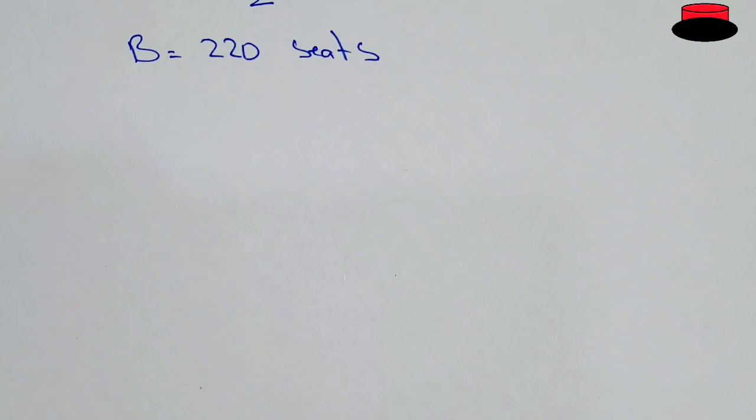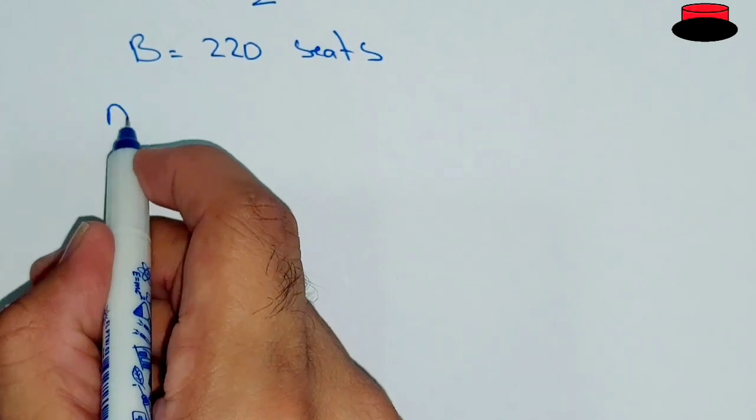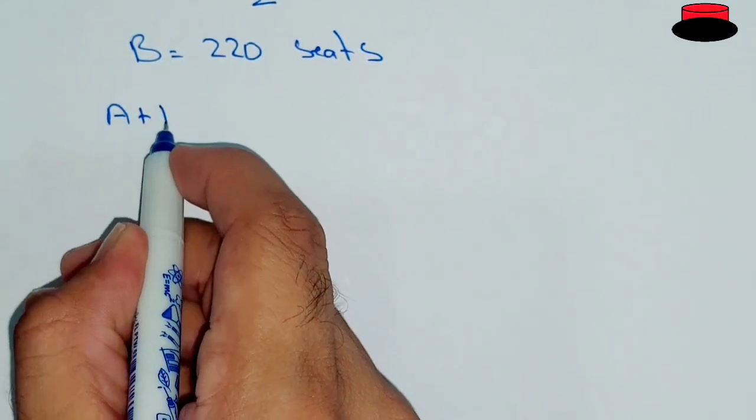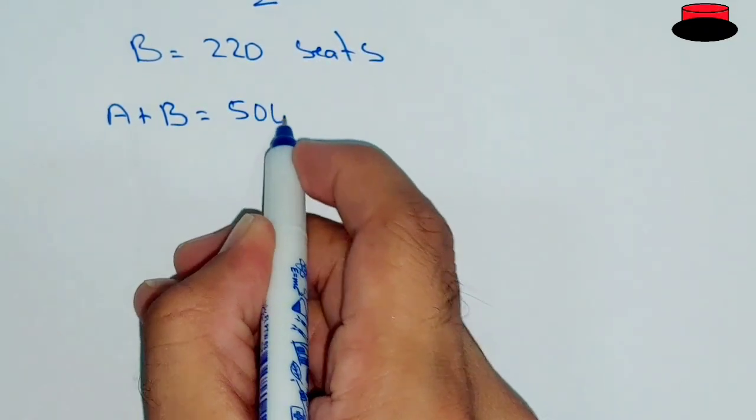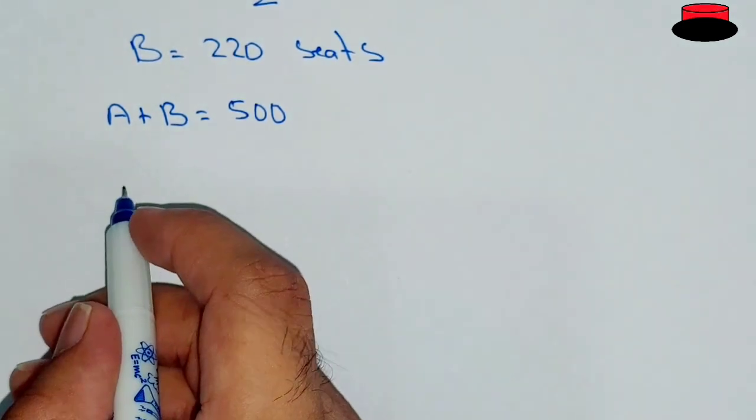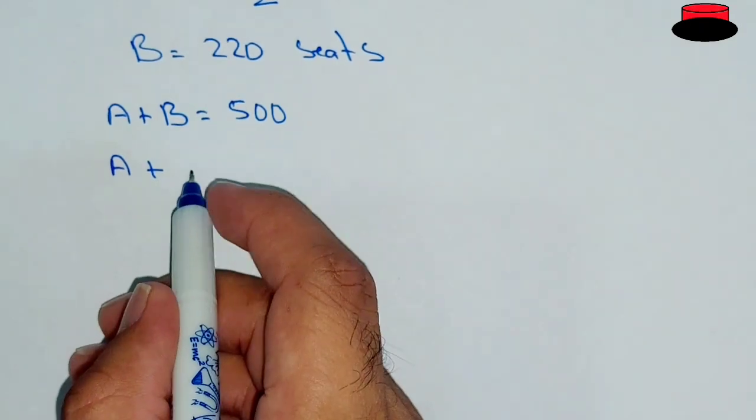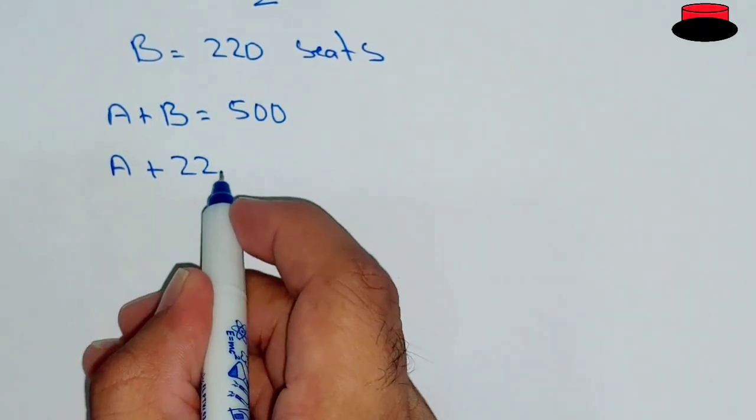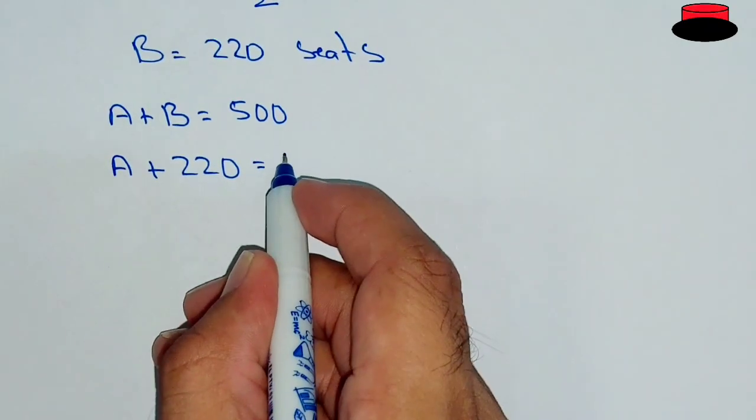Now let's find out the total number of seats in Plane A. So we know that A plus B is equal to 500, and since we know that the total number of seats in Plane B are 220, so A plus 220 equal to 500.